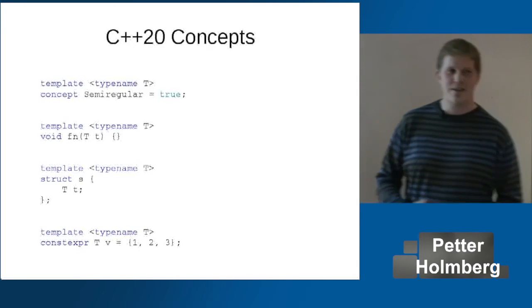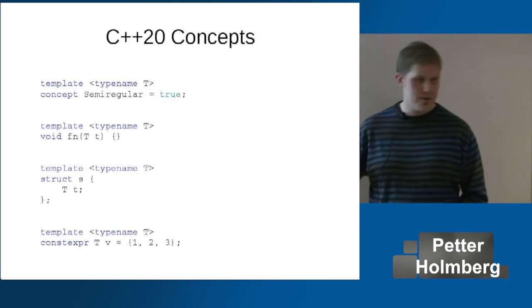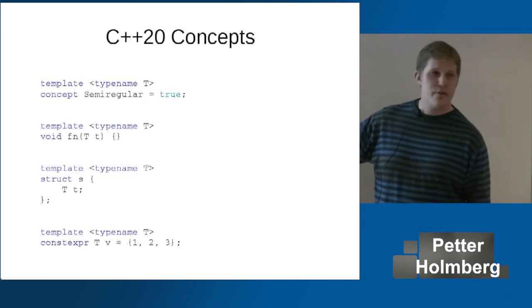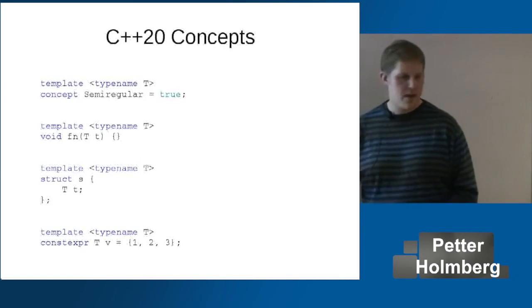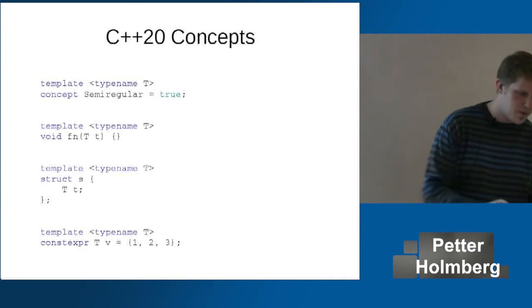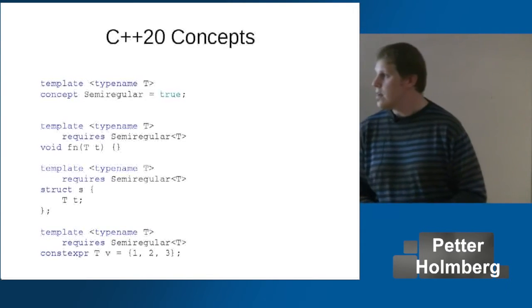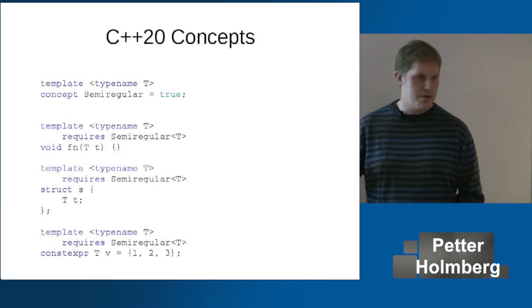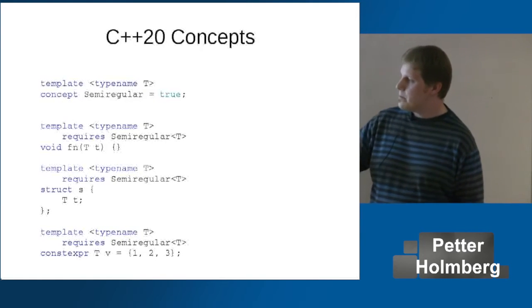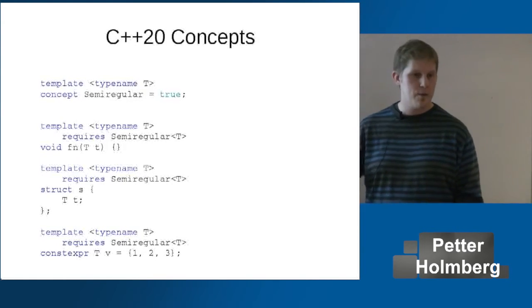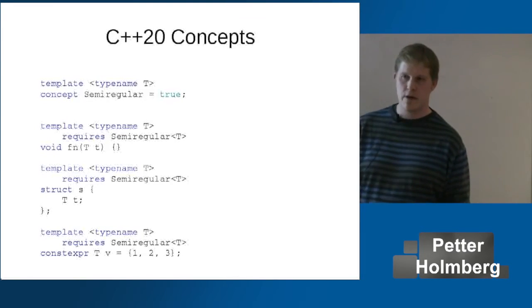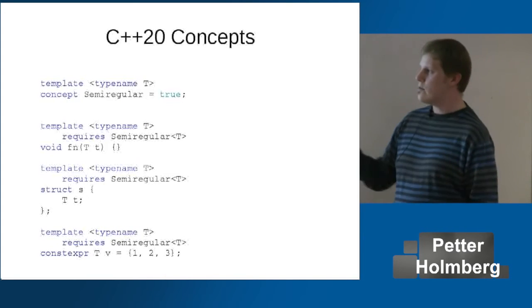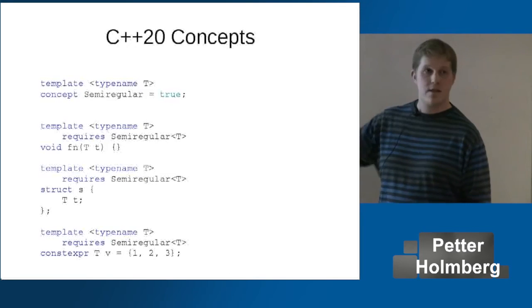This is where concepts come in. The problem is that this interface is not very good — it allows too many types to get through. With concepts, you can add a second new keyword, `requires`, like this. This is called the requires clause, and it's followed by a compile-time boolean expression, which can be the invocation of a concept. So now these templates can be instantiated only if T is a semi-regular type.